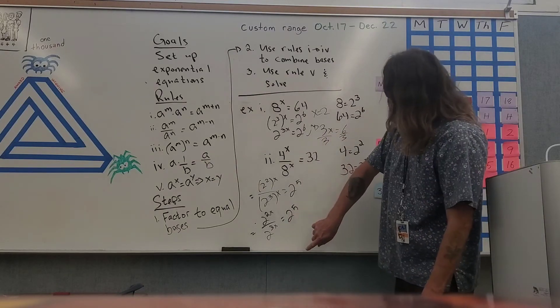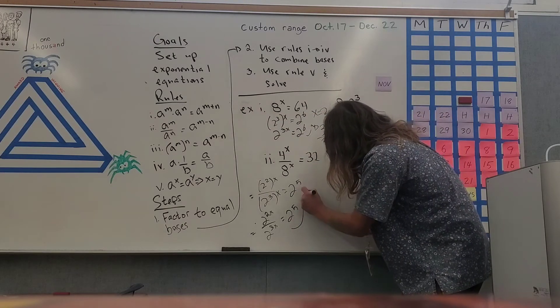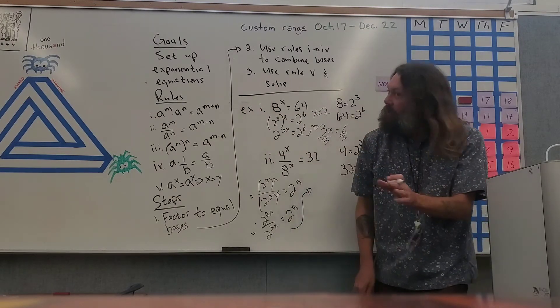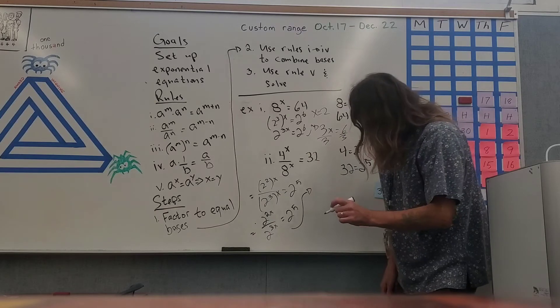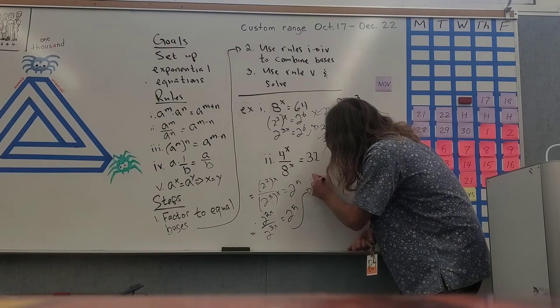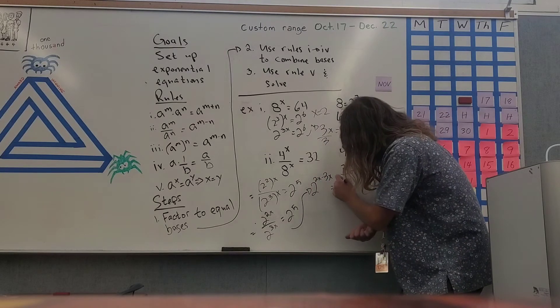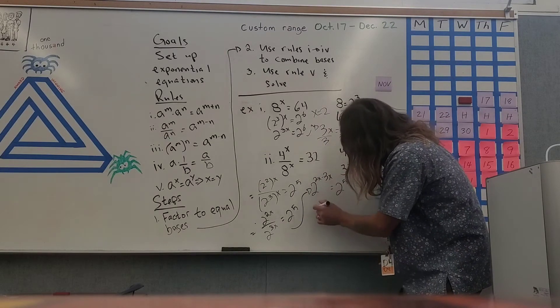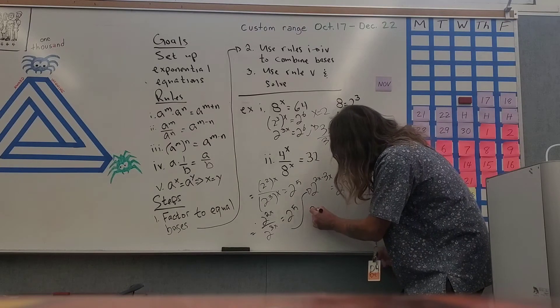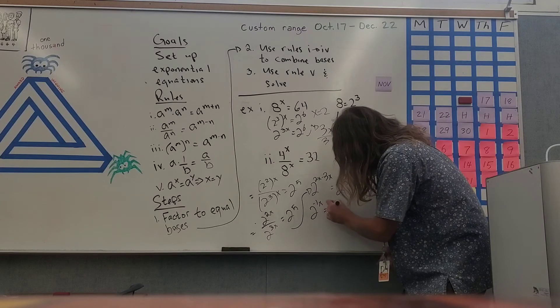I'm going to now use rule number two. So I get two to the power of two x minus three x, and that's equal to two to the power of five. Two x minus three x is negative one x, and negative one x is equal to two to the power of five.